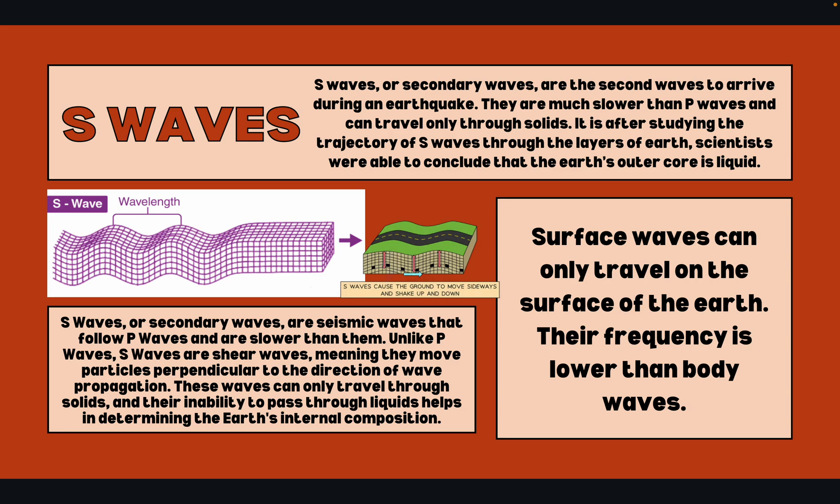S waves, or secondary waves, are seismic waves that follow P waves and are slower than them. Unlike P waves, S waves are shear waves, meaning they move particles perpendicularly to the direction of wave propagation.